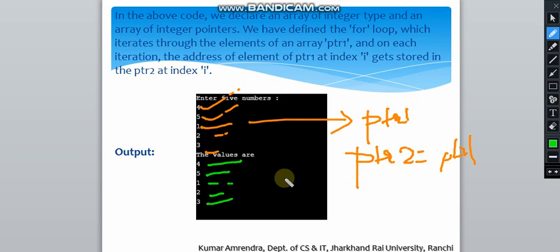In the above code, we declare an array of integer type and an array of integer pointers. We have defined a for loop which iterates through the elements of array ptr1, and on each iteration, the address of the element of ptr1 at index i gets stored in ptr2 at index i.